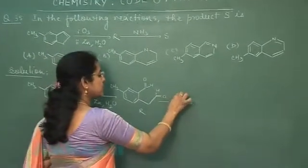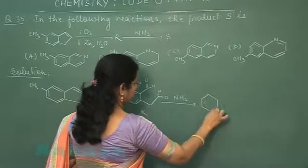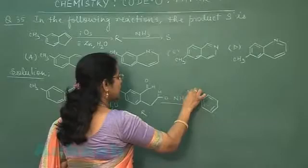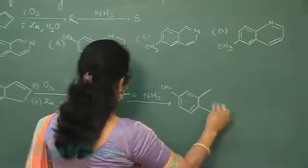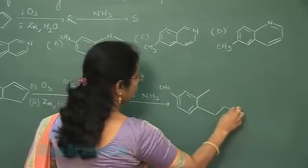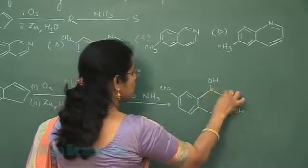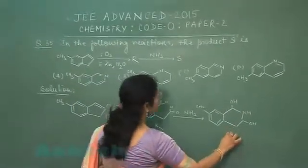Now this is treated with ammonia. This ring will remain intact as such. It becomes OH group. This is OH group. It is NH. This is the structure of compound.